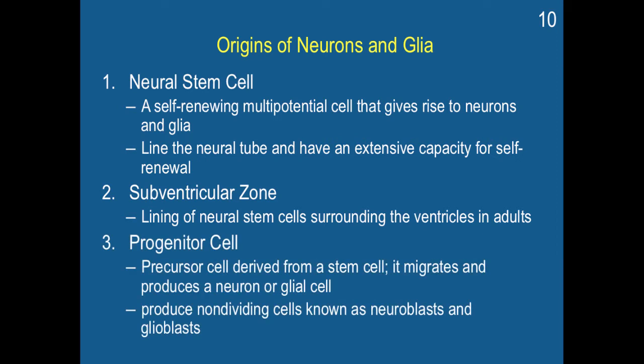A progenitor cell is a precursor cell derived from a stem cell. It migrates and produces either a neuron or a glial cell, and it produces non-dividing cells known as neuroblasts and glial blasts. A stem cell can differentiate into any type of cell in the body, and then a progenitor cell is derived from a stem cell, and a neural cell is also derived from a progenitor cell.